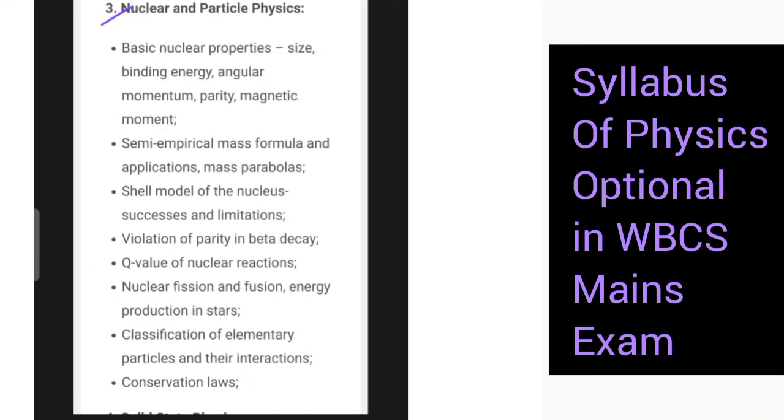In the next section you have nuclear and particle physics, under which comes basic nuclear properties: size, binding energy and angular momentum, parity, magnetic moment. Then we have semi-empirical mass formula and its applications, then mass parabolas. Then we have the shell model of the nucleus, successes and limitations. Then we have violation of parity in beta decay.